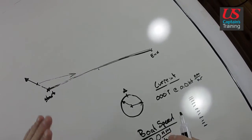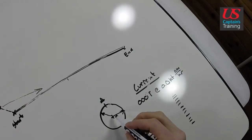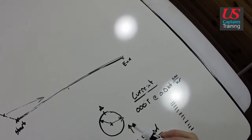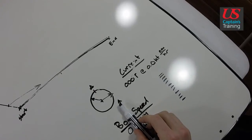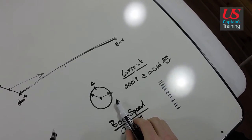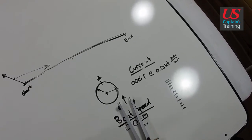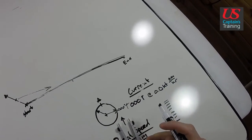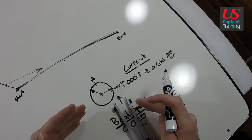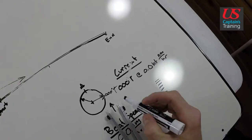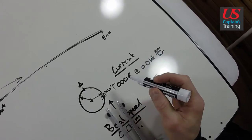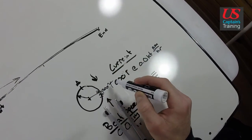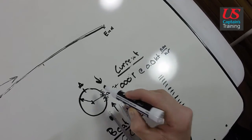Now one last step — this is where the leeway comes in. If our course to steer is here, they'll say a southerly wind — meaning a wind coming out of the south. A southerly wind causes three degrees of leeway, or a northerly wind causes two degrees of leeway. You need to correct into the wind. So if it's coming out of the south, you'll add it. If they say a northerly wind causes some degrees of leeway, you'll correct into that northerly wind and you'll end up subtracting it.